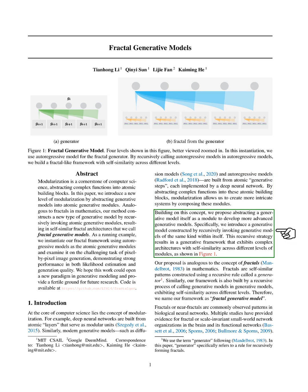We propose to treat a generative model itself as a module to develop more advanced generative models. Specifically, we introduce a generative model that calls upon other generative models of the same type within itself. This recursive approach leads to a framework with complex structures that show self-similarity at various levels, similar to fractals in mathematics.